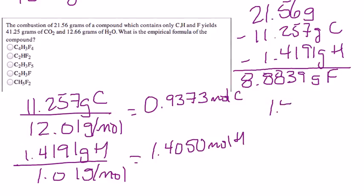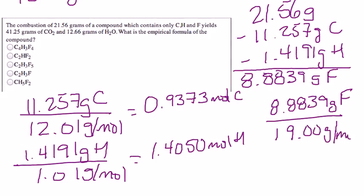And finally, the 1.4191, oops, made a mistake, the 8.8839 grams of fluorine divided by 19 grams per mole of fluorine gives us 0.46757 moles of fluorine.